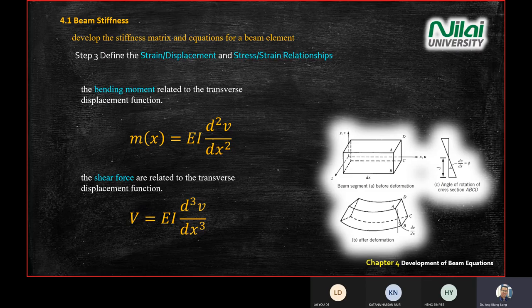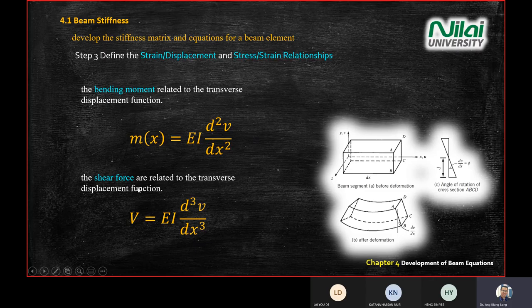These two equations are important for this chapter. If asked to find bending moment, write M = EI·d²v/dx² immediately. If asked for shear force, write V = EI·d³v/dx³. So: bending moment uses double differentiation, shear force uses triple differentiation of the vertical displacement. We have now arrived at Step 3, and today we look at Step 4.